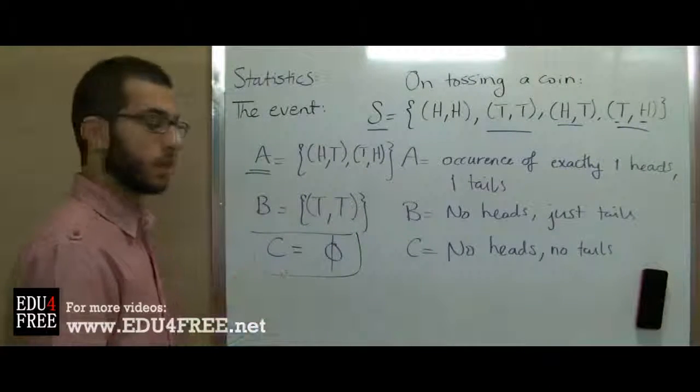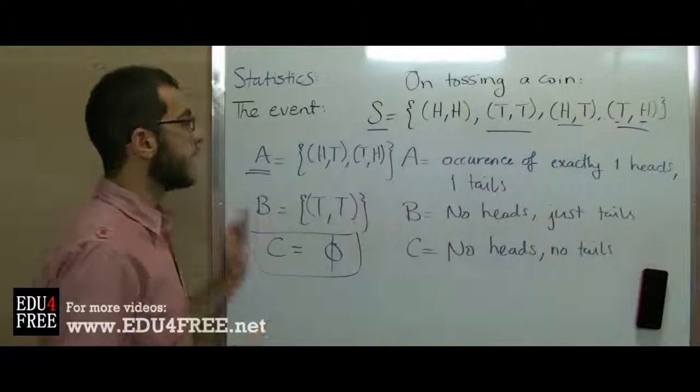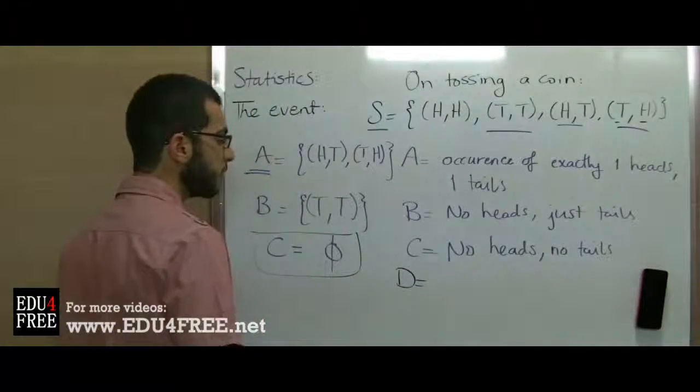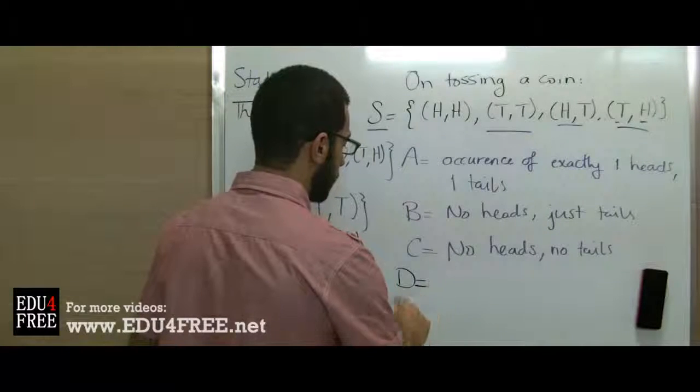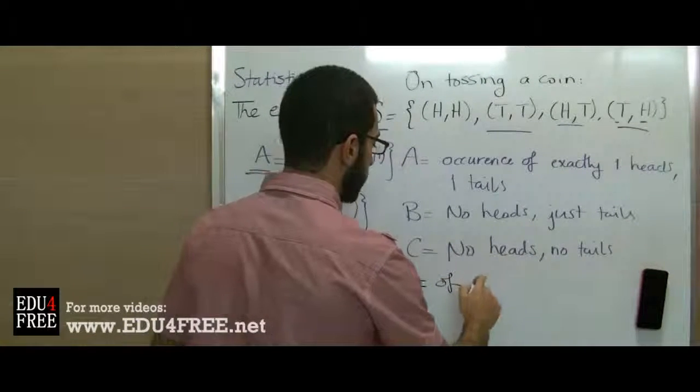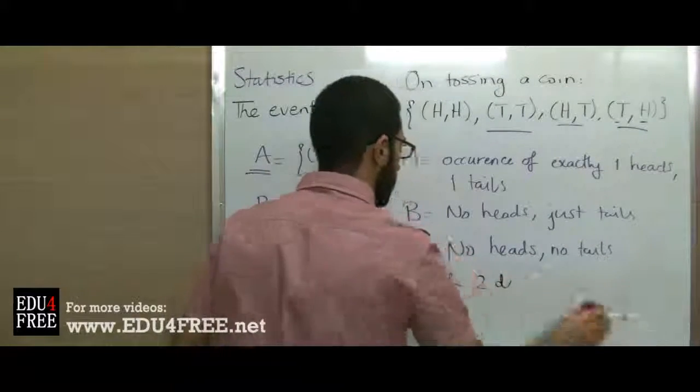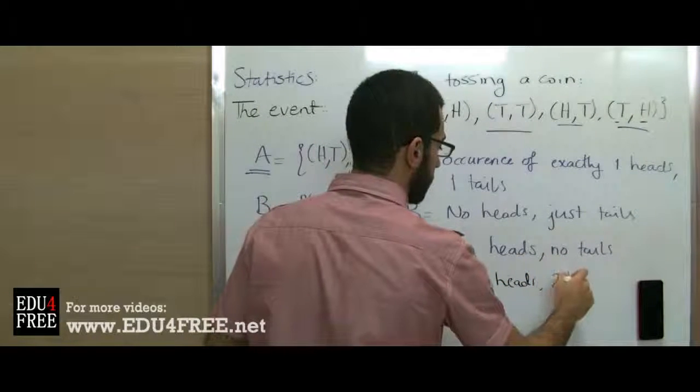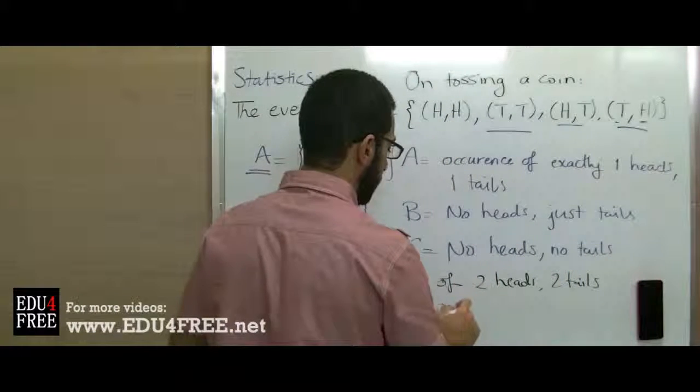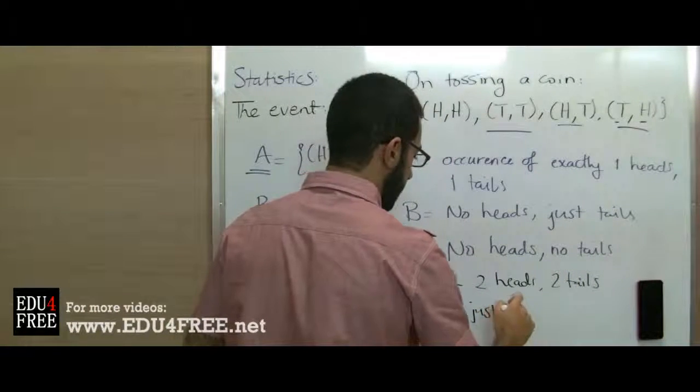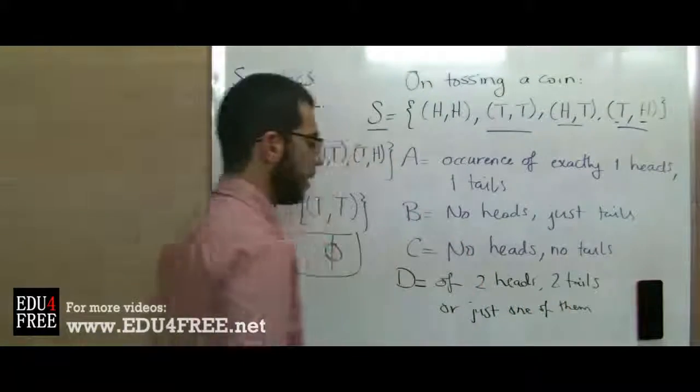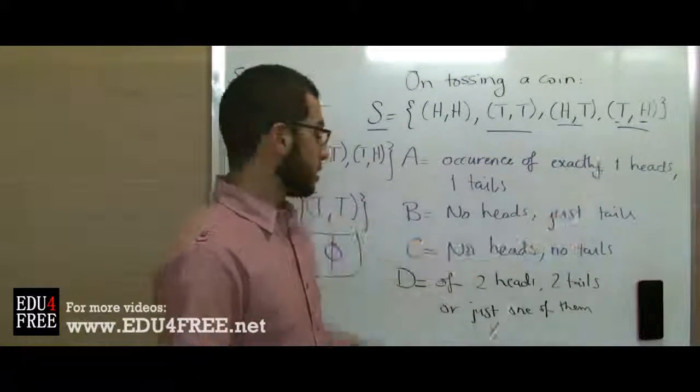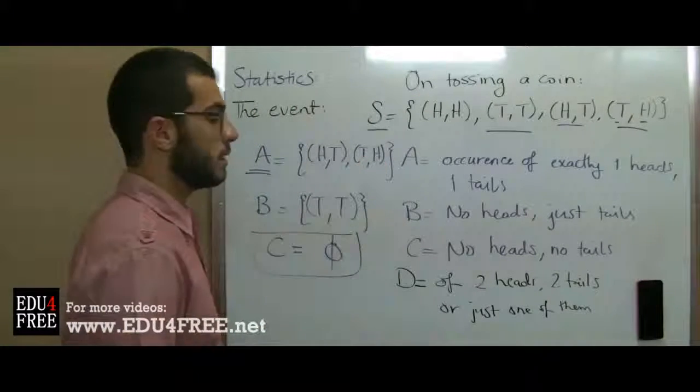And there is also something called a certain event. And this event actually equals the sample set. Like when I say D for example is the event of the occurrence of two heads, two tails, or just one of them. So here we have two heads, we have two tails, and we have just one of them in each of those. So actually D will equal S which is the sample set.